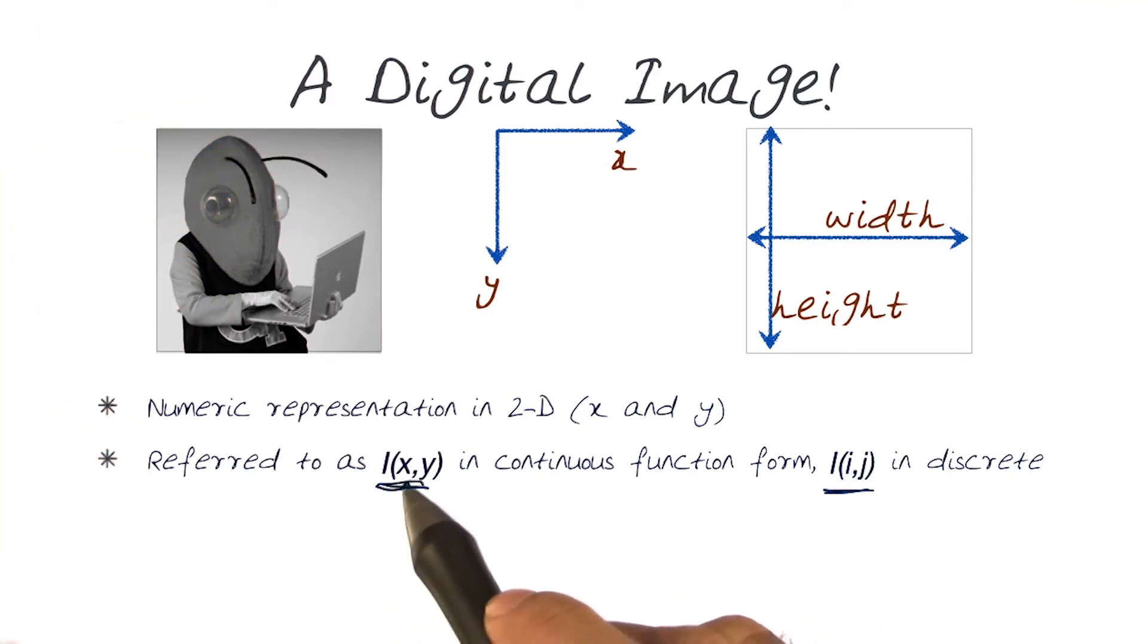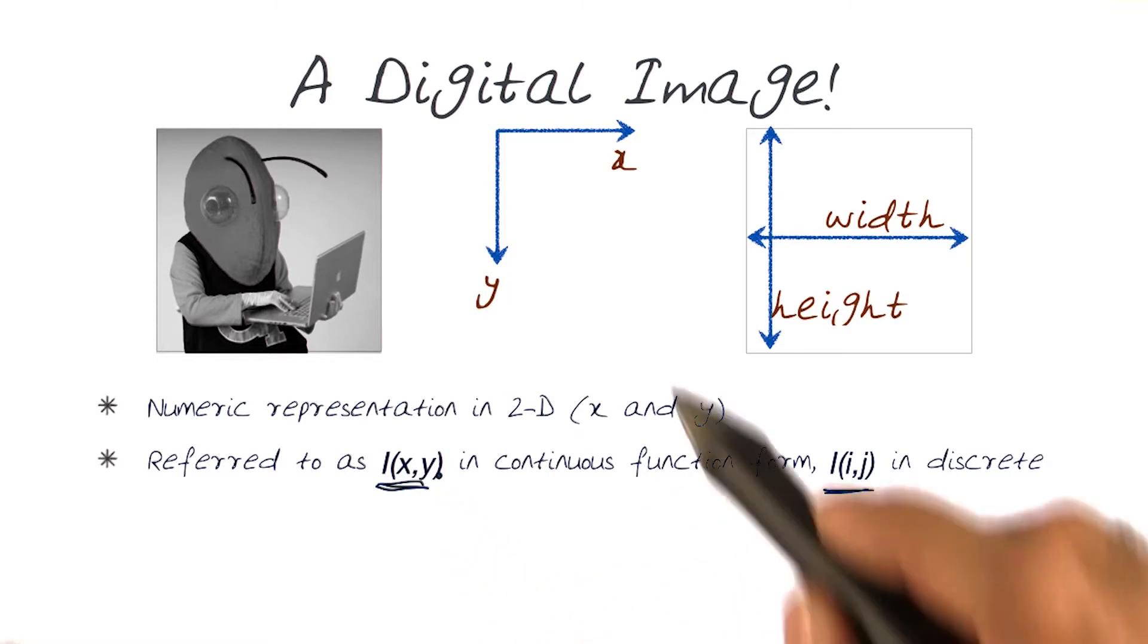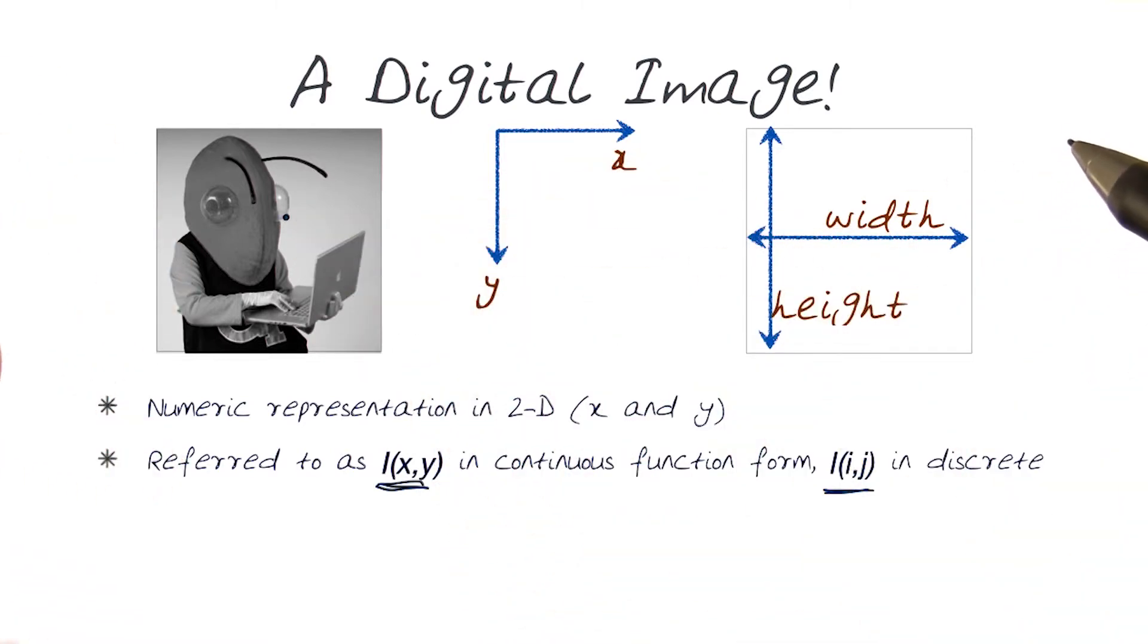If this was, of course, a continuous function, we would be looking for variables x and y to be able to extract the information out of this image.